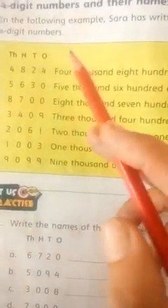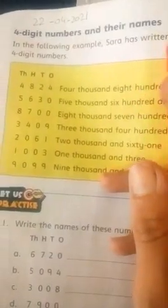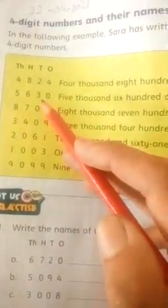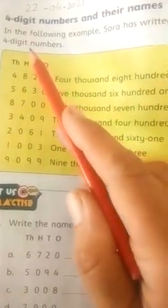We have four digit numbers to name. Just as you can see, there are the digits and names. We will tell you how to do it. In the following examples, Sarah has written the names of four digit numbers.